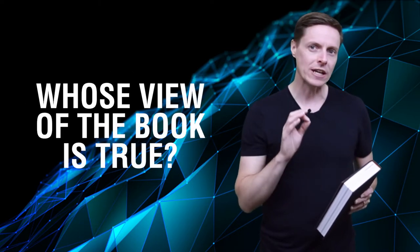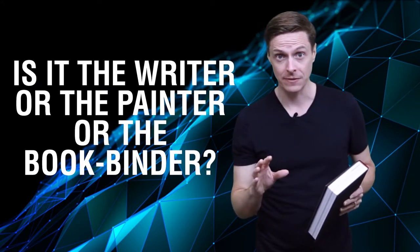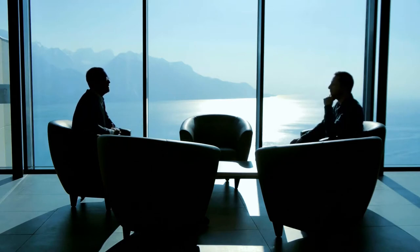Now ask yourself, whose view of the book is true? Is it the writer or the painter or the bookbinder? In each case, we are seeing different versions of the truth. This allows a plurality of versions of reality to coexist without being in tension with each other.